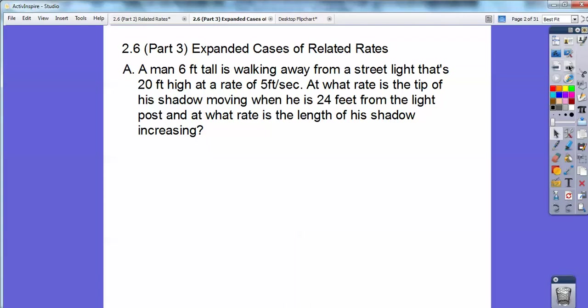A six-foot man, always six feet tall, is walking away from a street light that's 20 feet high at a rate of 5 feet per second. So he's walking away at a rate of 5 feet per second. At what rate is the tip of his shadow moving when he is 24 feet from the light post? And at what rate is the length of his shadow increasing? So it's asking two things right here.